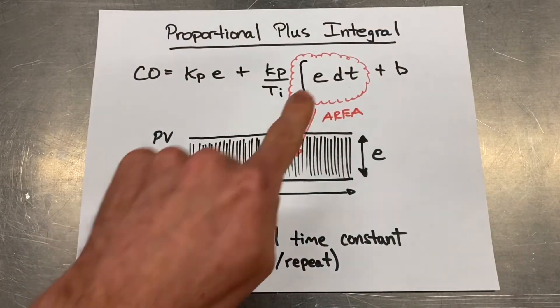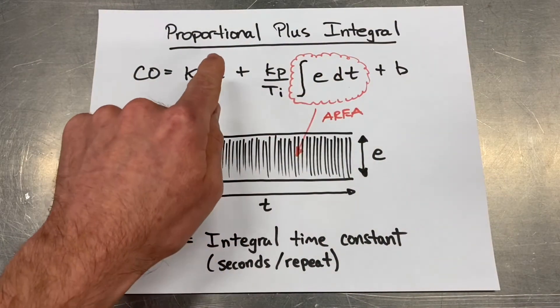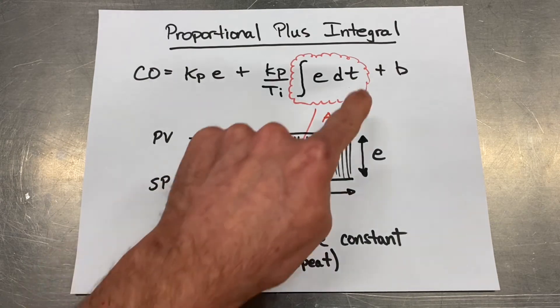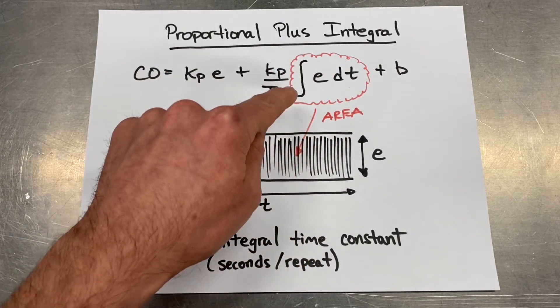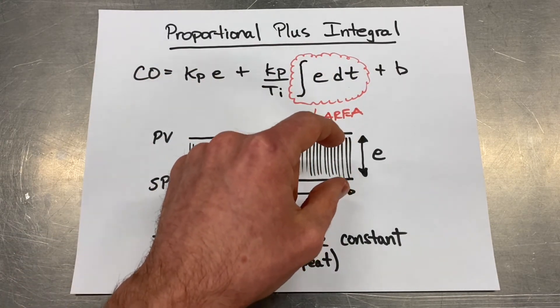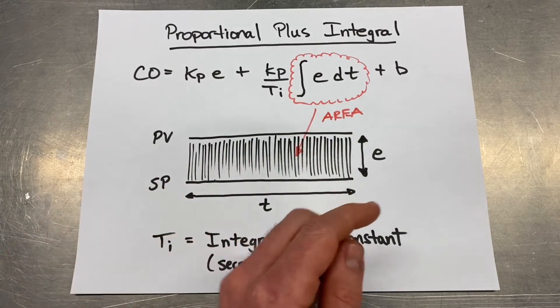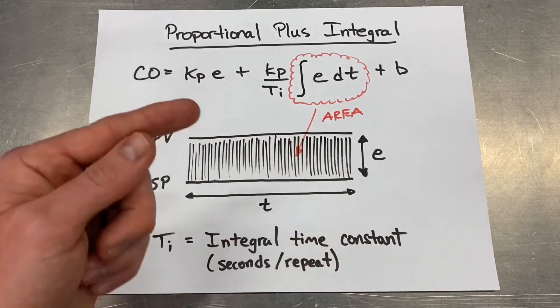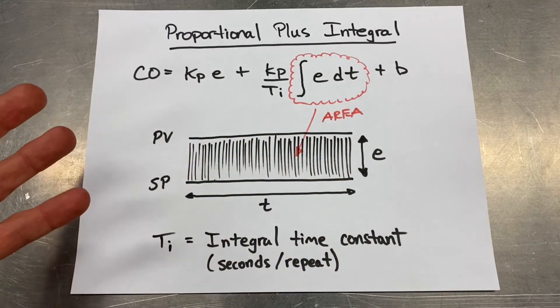So what we're going to do here to make Dan happy is we're going to introduce integral to our controller. So we're going to have a proportional plus integral controller. Right here is our integral term. We have this integral symbol right here. It's taking the area of the error versus the time here. So as time accumulates, we're going to have more and more area totalizing.